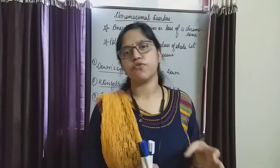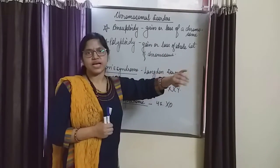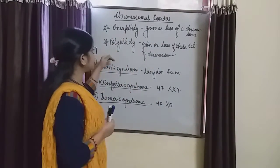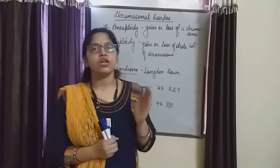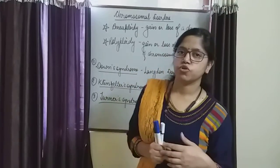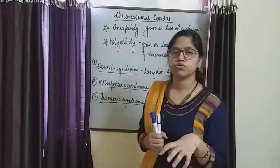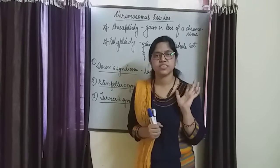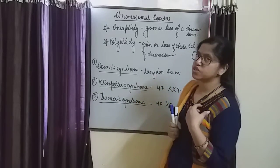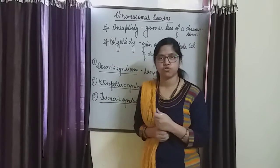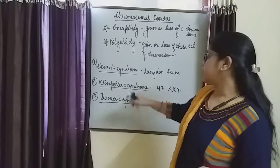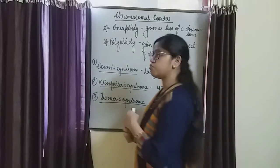In polyploidy, if any gain or loss of the whole set of chromosomes occurs — the entire set is added or deleted — that condition is known as polyploidy. Humans have 23 pairs of chromosomes; out of 23, 22 are autosomes and the remaining one pair is sex chromosomes. If any addition or deletion of the sex chromosome pair takes place, that condition is said to be trisomy.